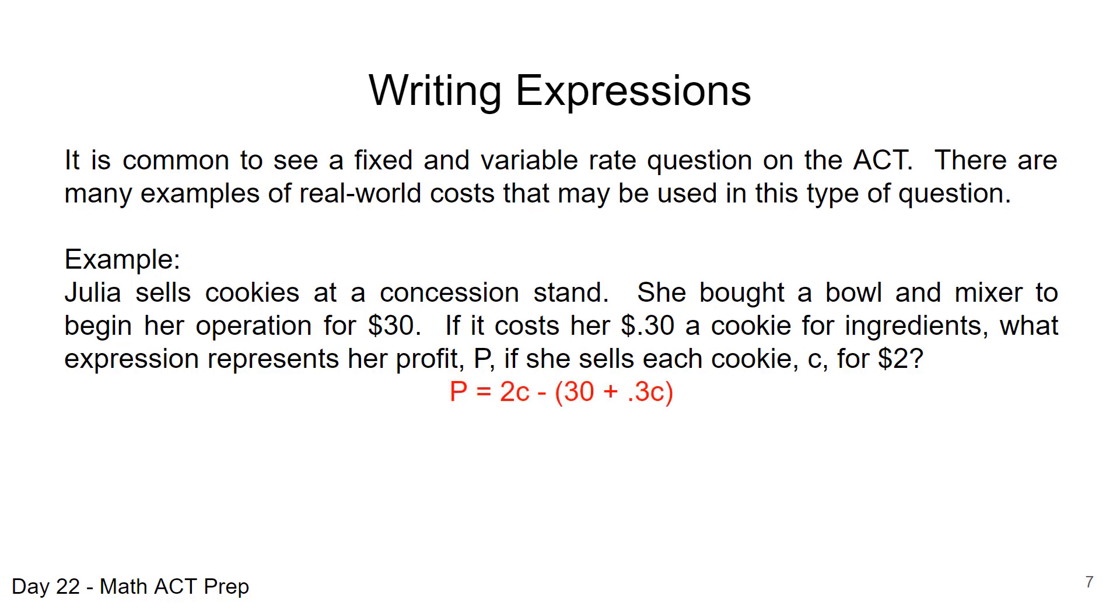When we look at this expression for P, she's going to make $2 per cookie. That's where we get the 2C. From that, we have to subtract off, and we put it in parentheses because in parentheses, that is our total cost. We have the $30 plus $0.30, 0.3 times C. For every cookie she sells, it's going to cost her $0.30. We can simplify this expression, get all of our C's together. We have to distribute the negative sign through the 30 plus 0.3C and we get 2C minus 30 minus 0.3C and then combine the C's, 1.7C minus 30. That is her profit. So we've taken the words from the question and we've been able to put that numerically as an algebraic expression.